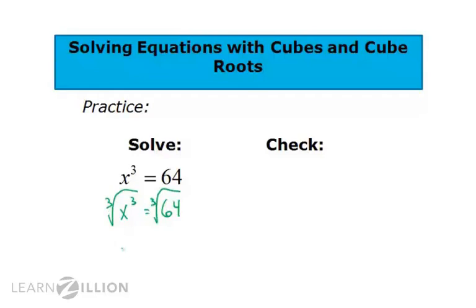Cube rooting undoes the cubing. We're left just with x equals the cube root of 64. So, what number times itself 3 times would equal 64? That is 4.